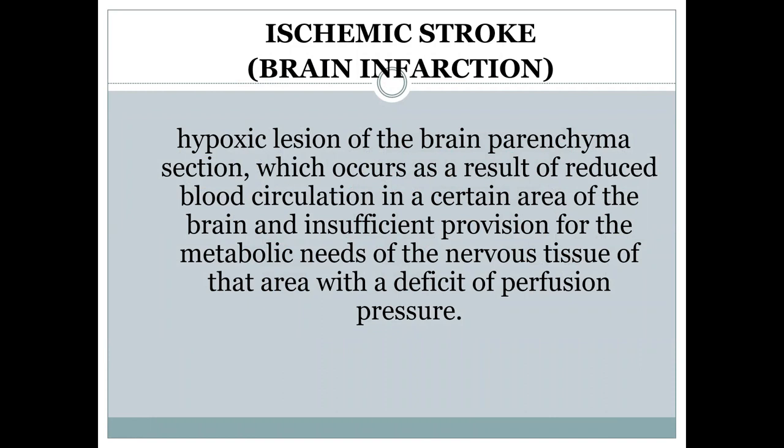We have a few types of stroke. One of them is ischemic stroke, also called brain infarction. It is a hypoxic lesion of the brain or an area of infarction that occurs as a result of reduced blood circulation in a certain area of the brain and insufficient provision of the metabolic needs of the nerve tissue in that area, with a deficit of perfusion pressure.